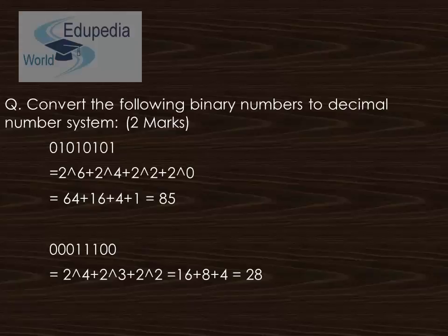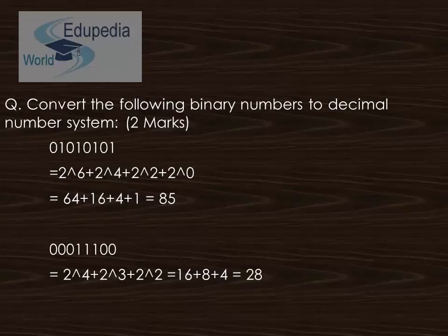The next question is to convert the following binary numbers to the decimal number system. The formula uses the number two raised to the power of the given position of each binary digit. Using this method, the decimal equivalents of the given binary numbers are 85 and 28.